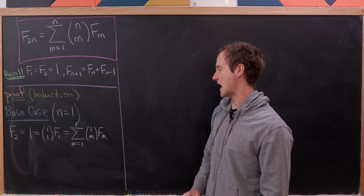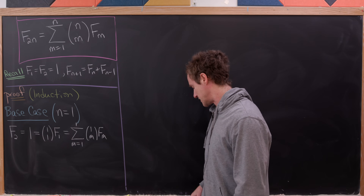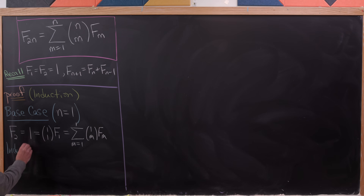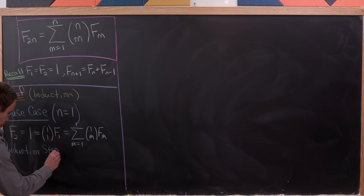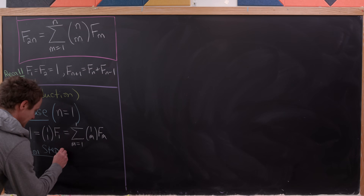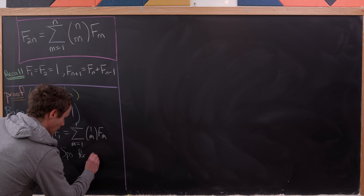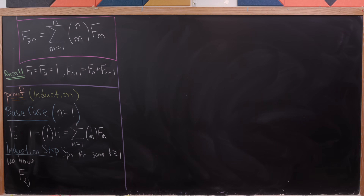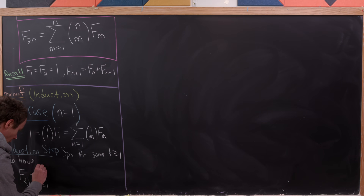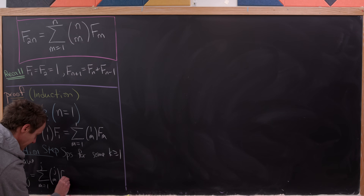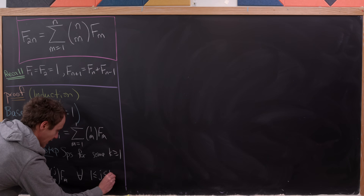That's all we need for the base case. Now let's set up the induction step. The induction step begins with a strong induction hypothesis. Suppose for some k greater than 1, we have f sub 2j equal to the sum as m goes from 1 up to j of j choose m times f sub m, for all j between 1 and k.